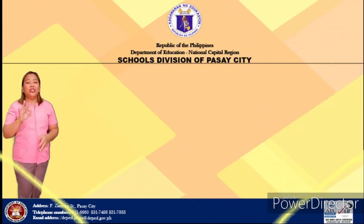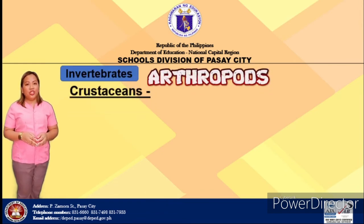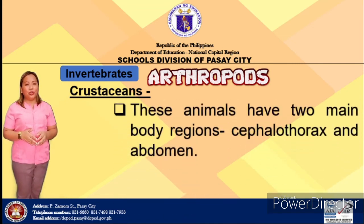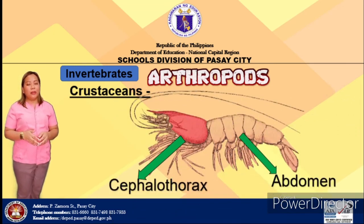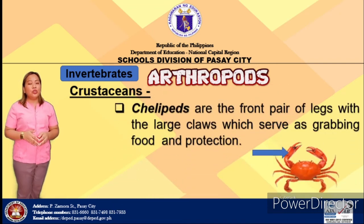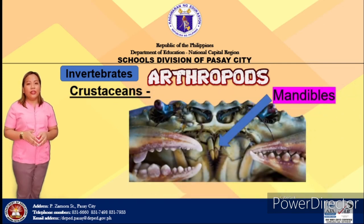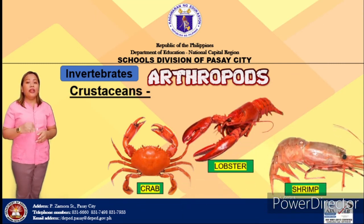The third class of arthropods are the crustaceans. Crustaceans are arthropods that live in water. These animals have two body regions: the cephalothorax and abdomen. They have many specialized appendages. The front pair of legs with large claws is called the chelipeds, used for protection and grabbing food. The jaw-like appendages on their head used for chewing and crushing food are called mandibles. Examples are crabs, shrimps, and lobster.